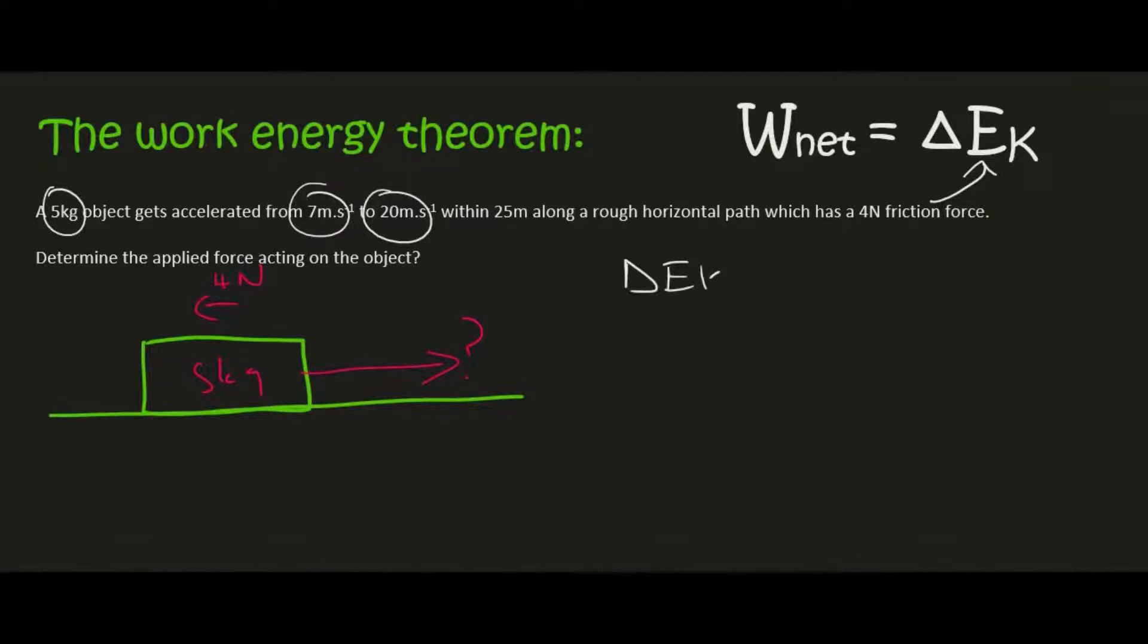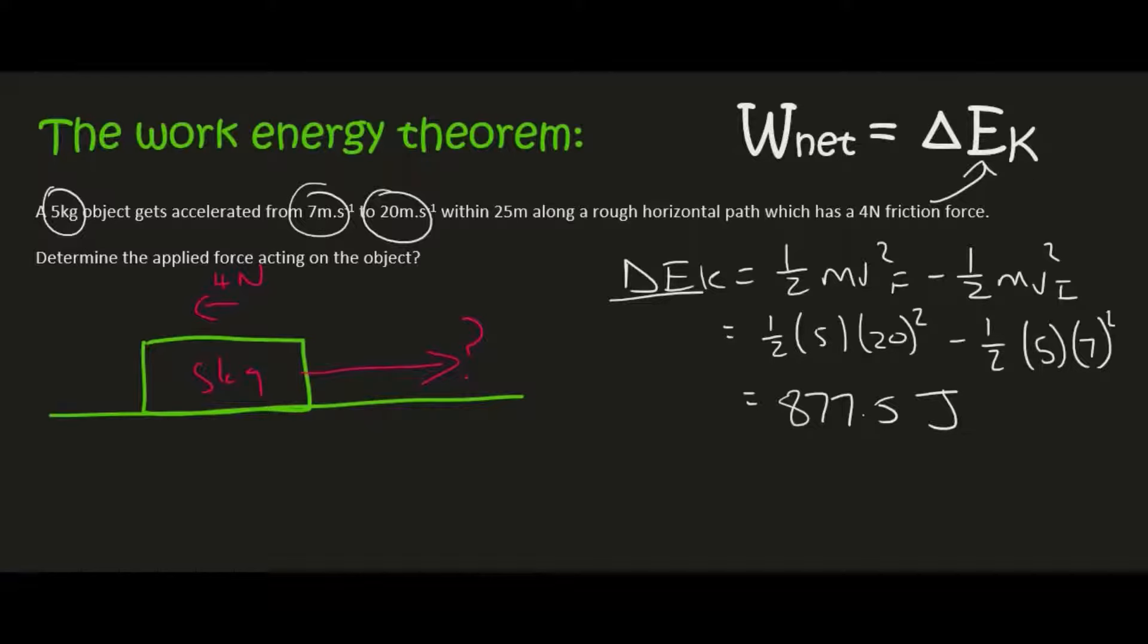So we could say that the change in E_K is a half mv squared final minus a half mv squared initial. And so that's just going to be a half, your mass is 5, your final velocity is 20, please remember the square, a lot of people forget that. Then your initial mass is obviously also 5 and your initial velocity is 7 squared. And so if you go work that out you end up with 877.5. Now kinetic energy is joules. So now we have this part.